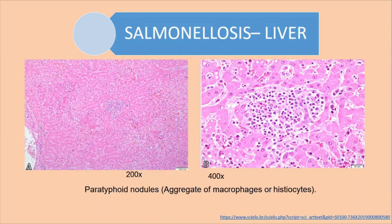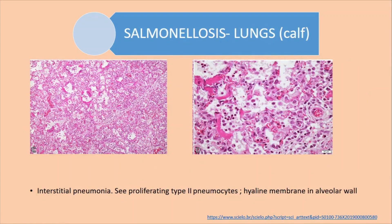Histologically, another lesion in the liver we can see is granuloma formation, also known as paratyphoid nodules. As mentioned, salmonellosis in animals is usually known as paratyphoid. These paratyphoid nodules are nothing but aggregations of macrophages and histiocytes. This is a 200x view. We can see this aggregation of macrophages and histiocytes in the different parts of the liver. In the lungs, there is fibrin infiltration and interstitial pneumonia, with thickening and hyaline membrane formation on the alveolar wall.